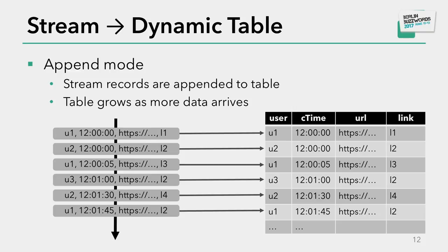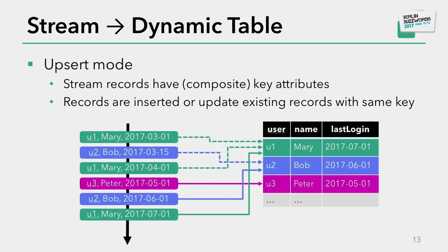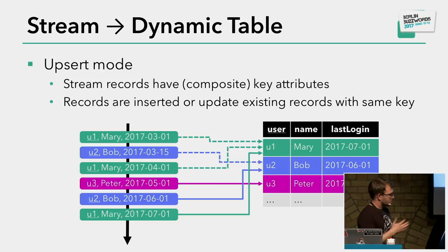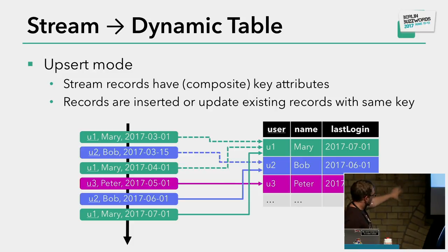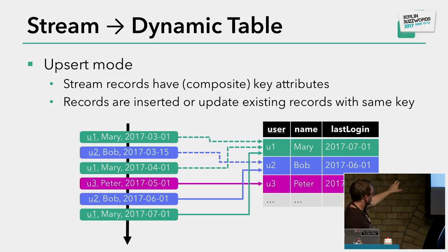Another mode to turn a stream into a dynamic table is the upsert mode. Here the input data has a composite key — key attributes — and all records arriving from the stream are either inserted if we have never seen that key before, or we update the existing record with the same key. So if we have a stream of six events and the first one has user U1 with name Mary, later events with the same user ID U1 overwrite the earlier record.